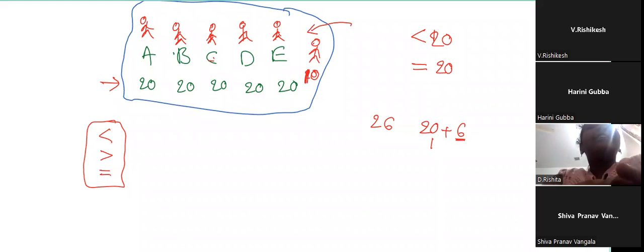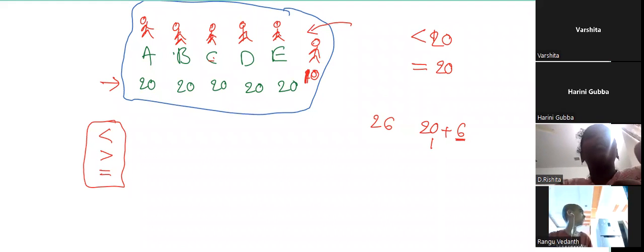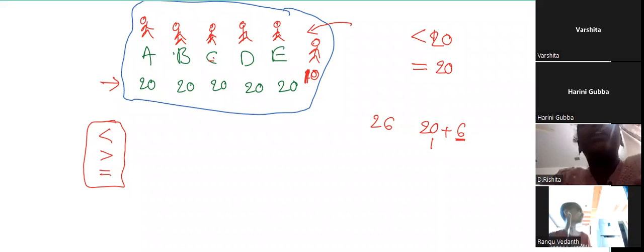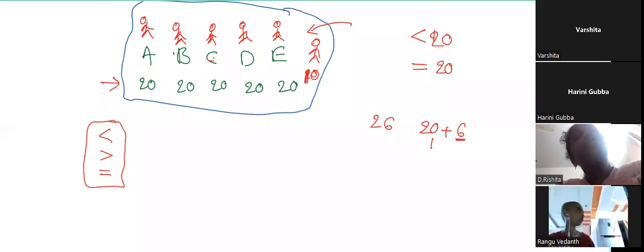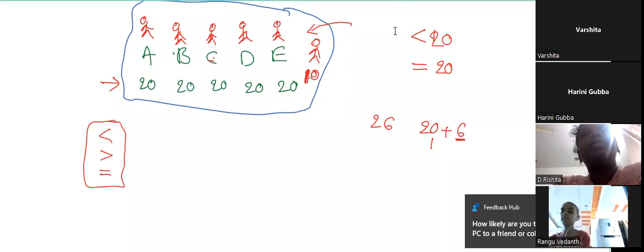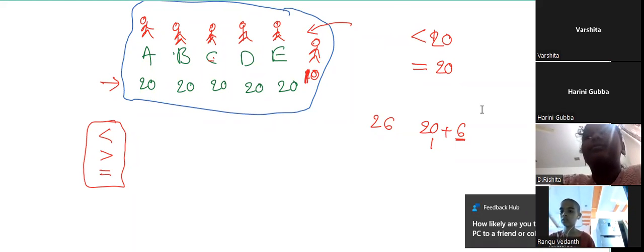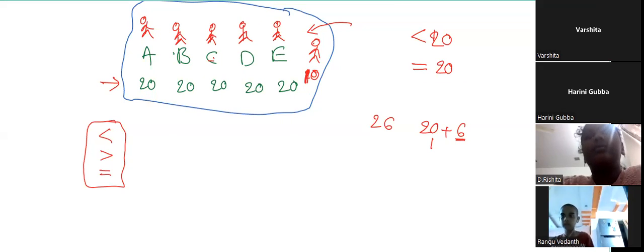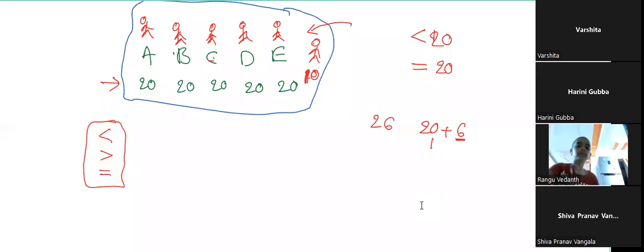If you have 20 rupees and enter the group, it is equal. But if you had 26 rupees and distributed six to them, it is also equal — but the average is now 21, not the same as the previous 20. Previously it is 20 rupees, but now it becomes 21 rupees — average increased by one rupee.